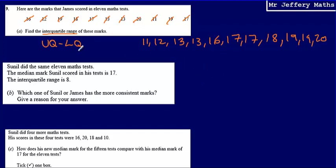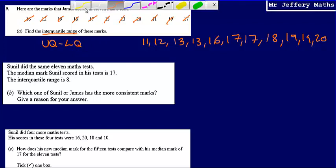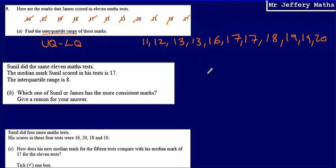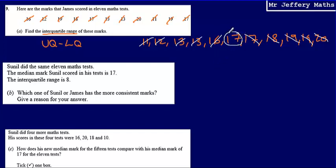Now to work out the lower quartile, we're going to start by finding the median for this set of numbers. The median is the number which is halfway along, so I'm just going to cross off a number from each end until I get to the middle. I've crossed off five numbers from each end, and so I can say that my median is 17.